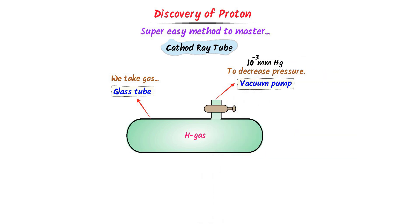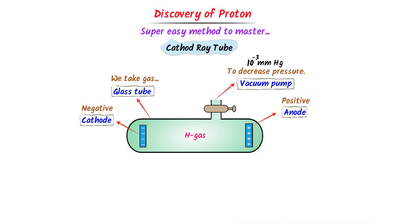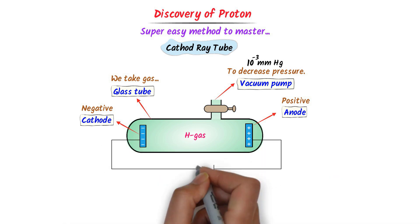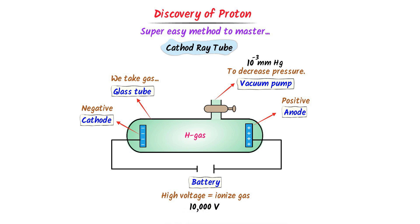The third part of the cathode ray tube is metallic strips: the cathode, which is negatively charged, and the anode, which is positively charged. The fourth part is a high voltage source like a battery. We use high voltage to ionize the gas inside the glass tube — for example, 10,000 volts to ionize the hydrogen gas.